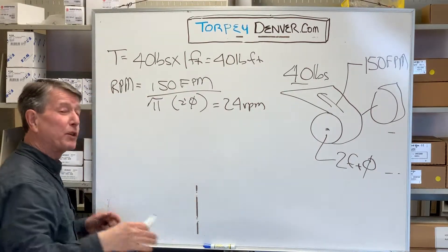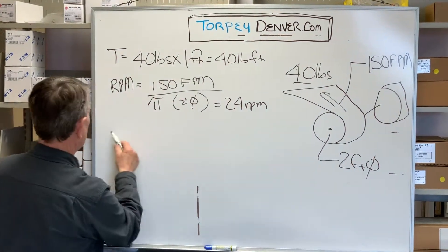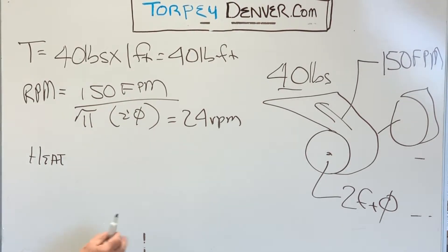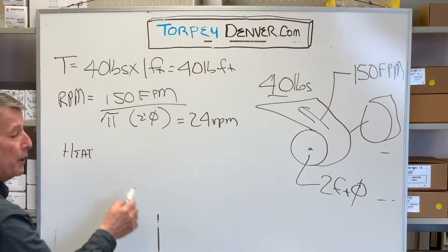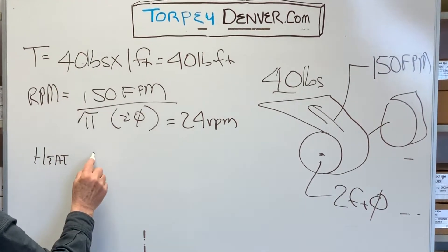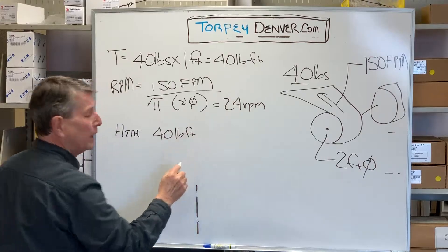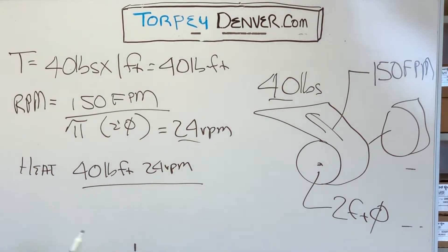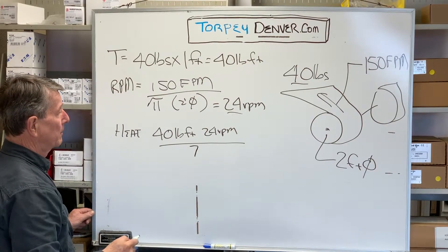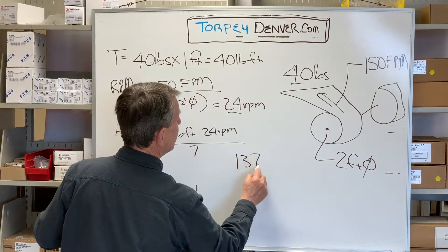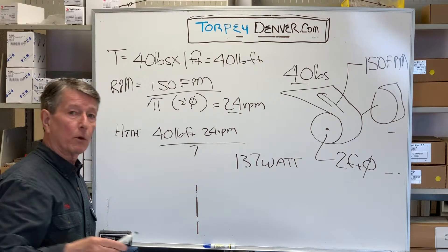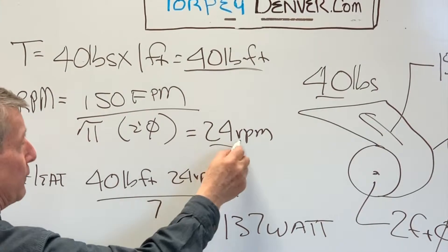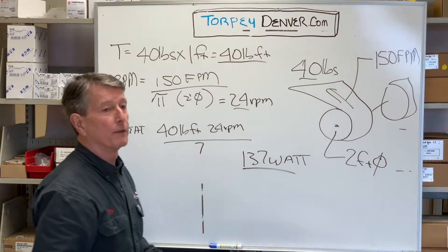The final step, very important, is how much heat is going to be generated during slipping. That brake is going to be continuously slipping, so heat is very important and it can determine a successful application. To calculate slip watts, we take our torque of 40 pound-feet times the RPM of 24 and divide by the constant 7. That gives us 137 watts. So when selecting a brake, we want one that can handle 40 pound-feet of torque, 24 RPM, and 137 watts of continuous heat dissipation.